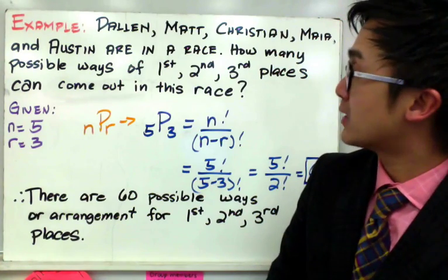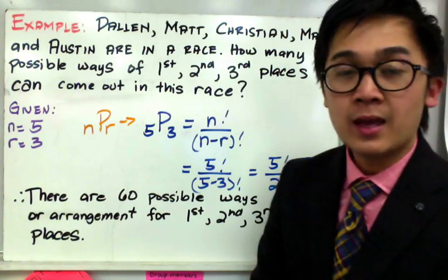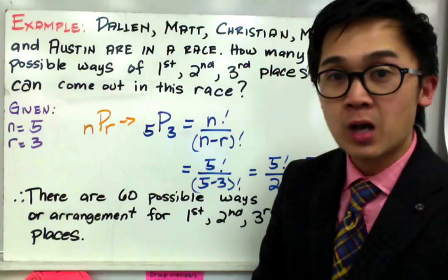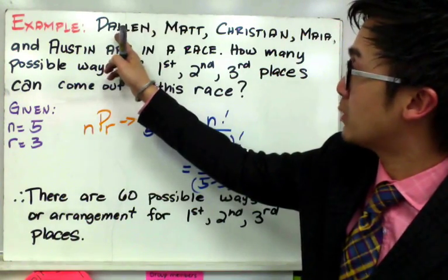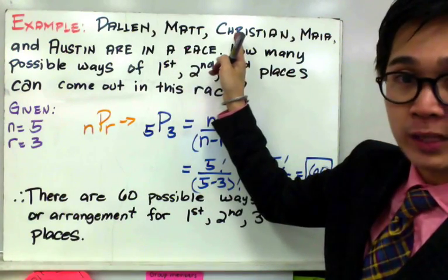Now logically, one of the possible ways that we'll have 1st, 2nd, and 3rd is we can have Dallin as the 1st place, Matt as the 2nd place, and Christian as the 3rd place.